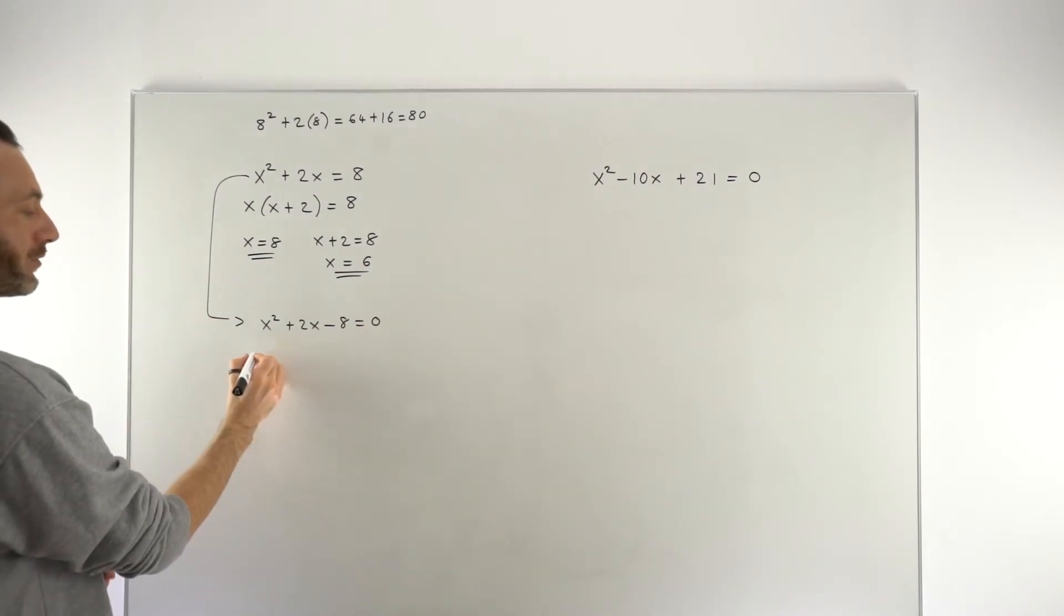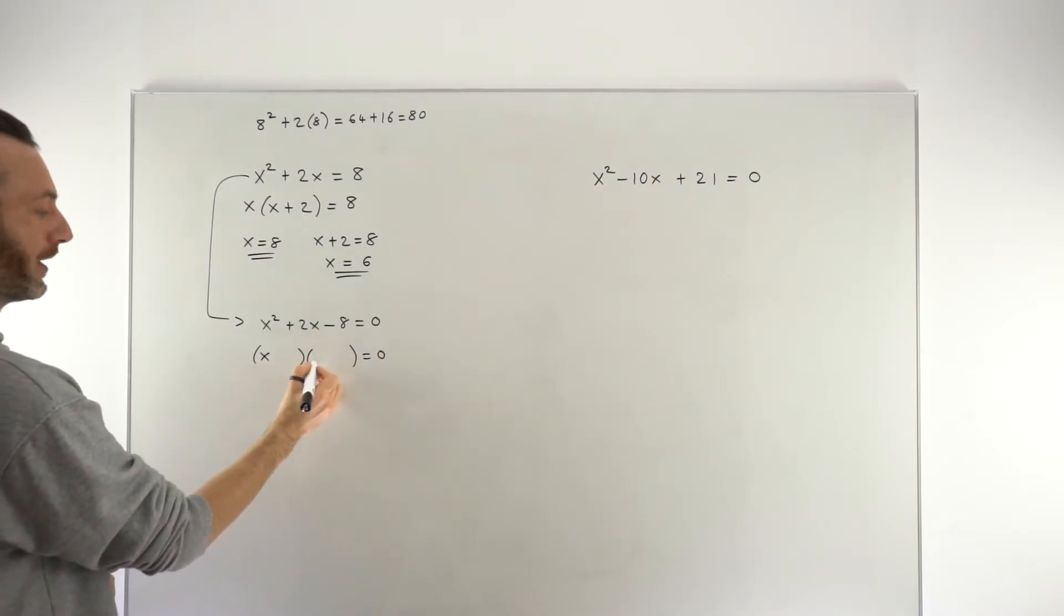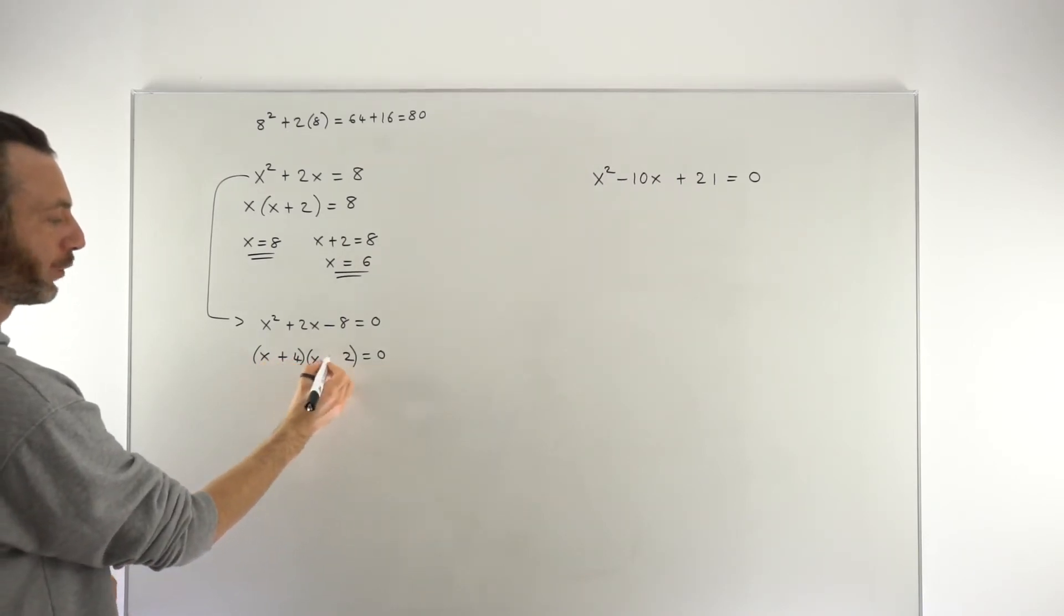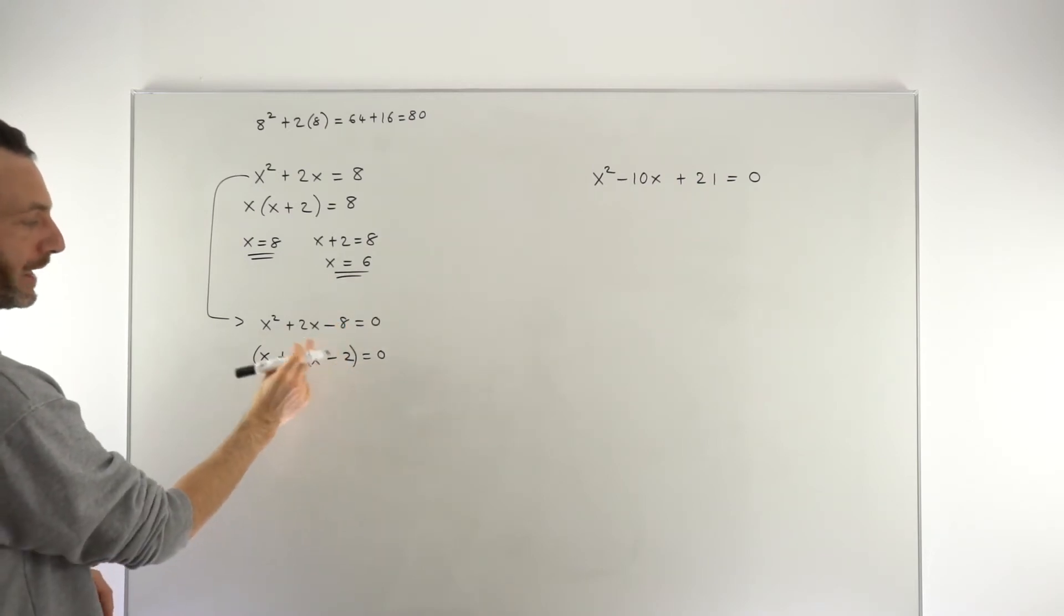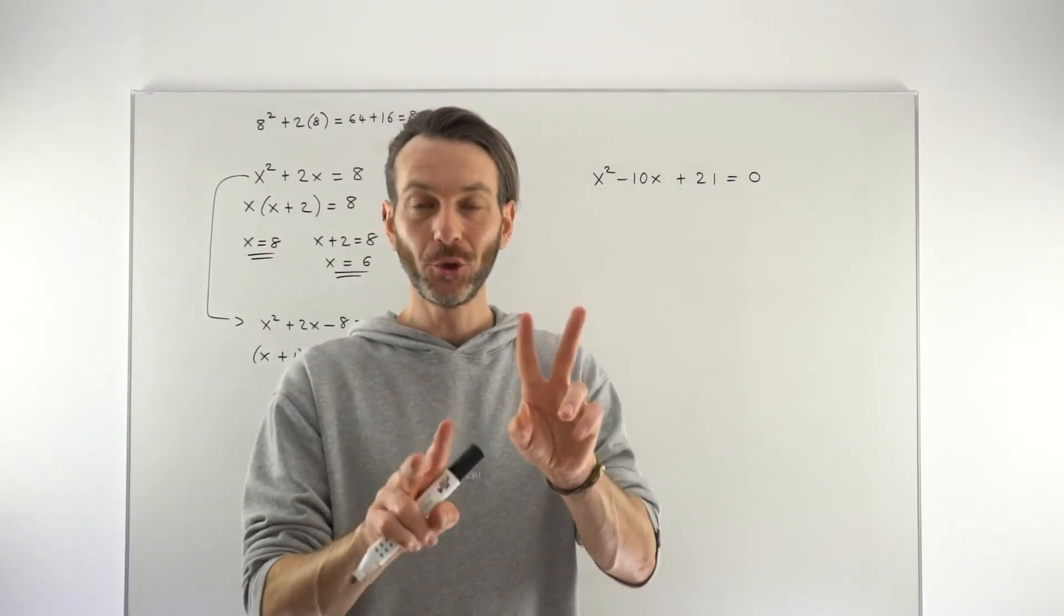From there we then factorise into two brackets, not one bracket although it is possible to factorise into one bracket in a quadratic equation but not this particular one. And then a plus 4 and a minus 2 that would give us a minus 8 when we multiply those together, positive 4 minus 2 gives us plus 2 so that's the correct factorisation and it's those two brackets that we then separate into two mini equations.